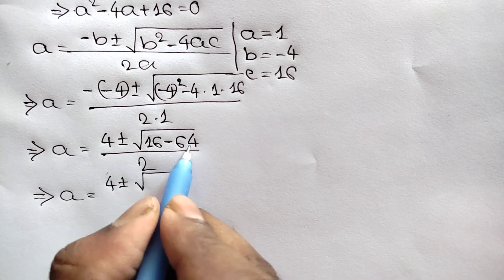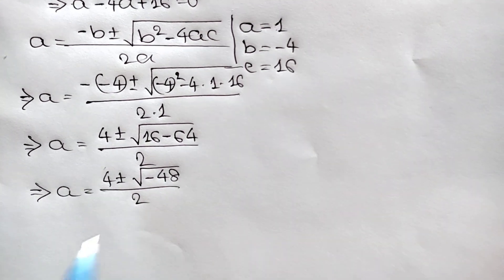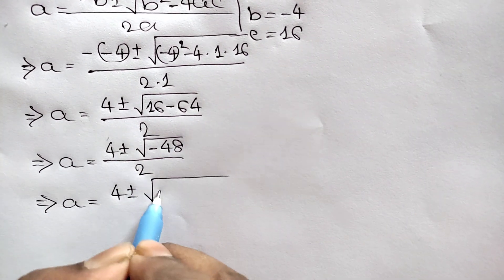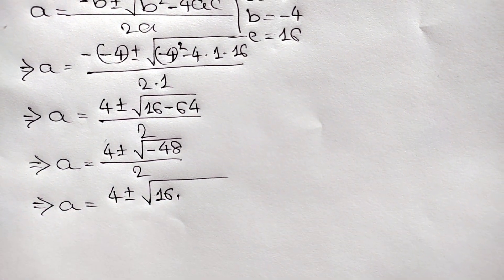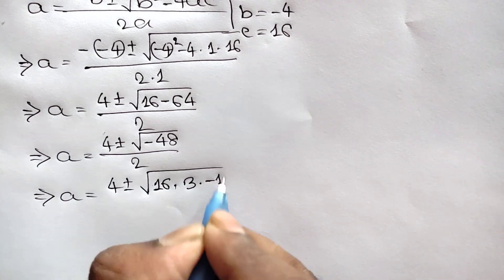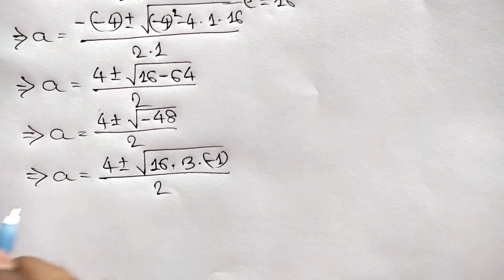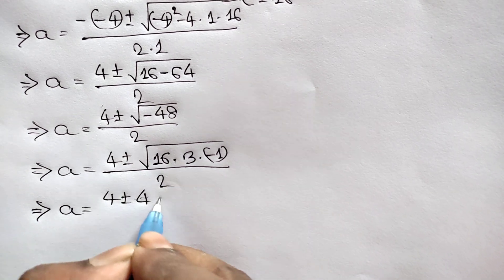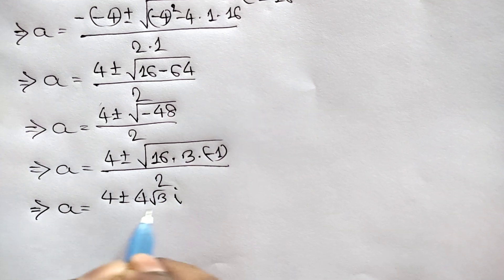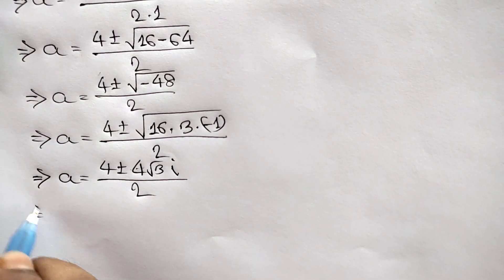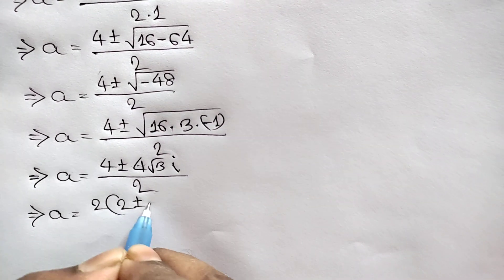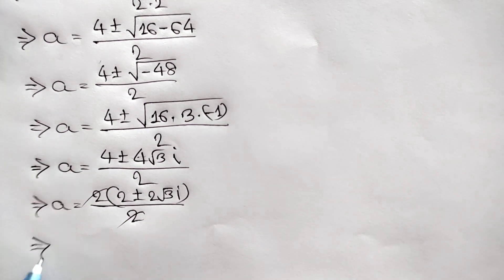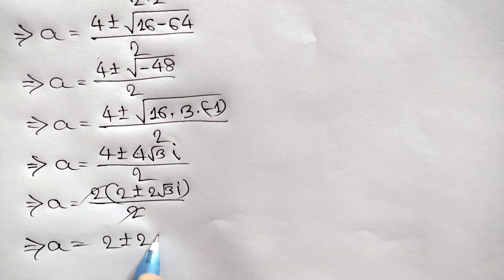This simplifies to 4 plus or minus square root of negative 48, over 2. Negative 48 can be written as 16 times 3 times negative 1, so the square root becomes 4 times square root of 3 times i (since square root of negative 1 is i). Dividing by 2 gives a equals 2 plus or minus 2 square root of 3 times i.